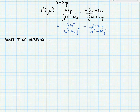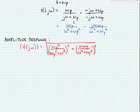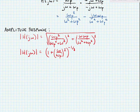Let's first find the amplitude response. The magnitude of H of j omega is equal to the square root of omega p squared divided by omega squared plus omega p squared, quantity squared, plus omega times omega p divided by omega squared plus omega p squared, quantity squared. We can do some algebra to factor out this equation and end up with H of j omega equal to 1 plus omega divided by omega p squared, that whole quantity to the minus one-half power — in other words, 1 over the square root of that quantity.